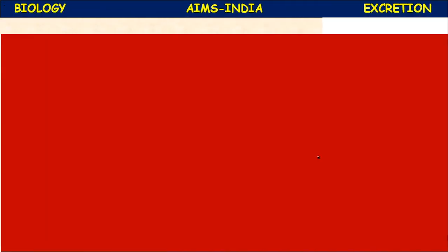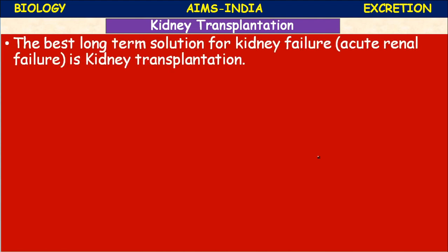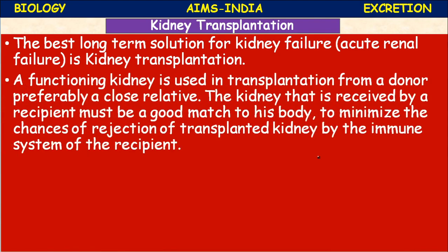The best long-term solution for kidney failure or acute renal failure is kidney transplantation. A functioning kidney from a donor - preferably a close relative - is used. The kidney received by the recipient must be a good match to his body to minimize the chances of rejection of the transplanted kidney by the immune system.